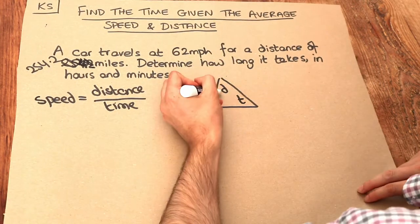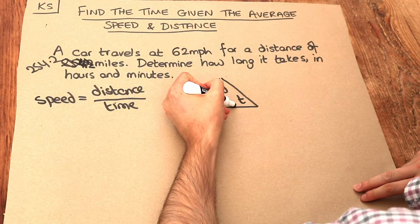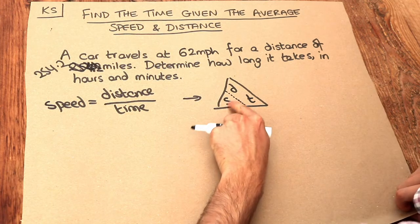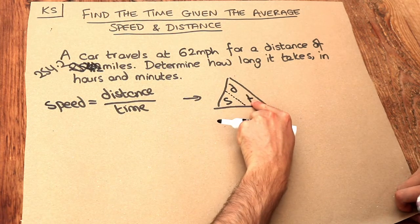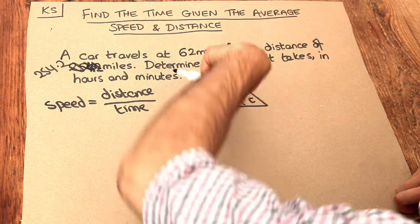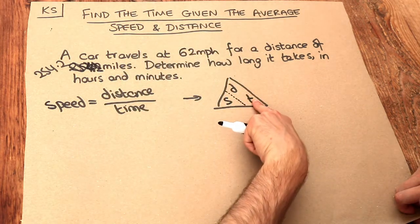And the way it works is this. If we put a line here, that's saying that the speed is the distance over the time. Because can you see that distance is above time in this little diagram?